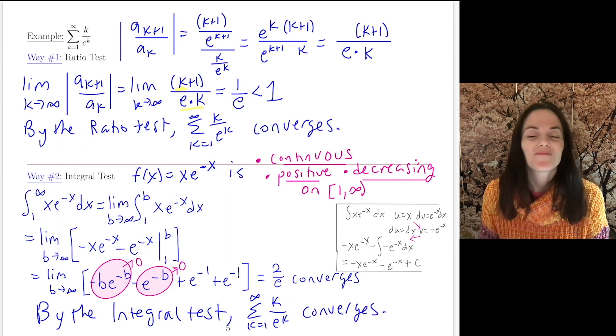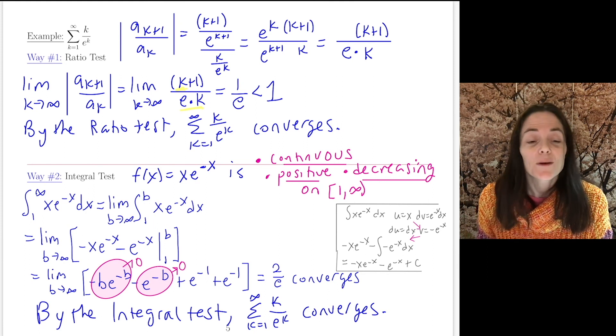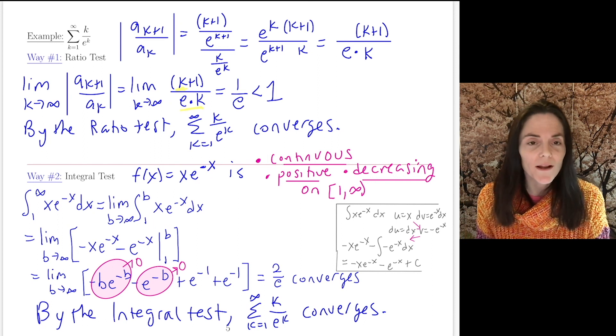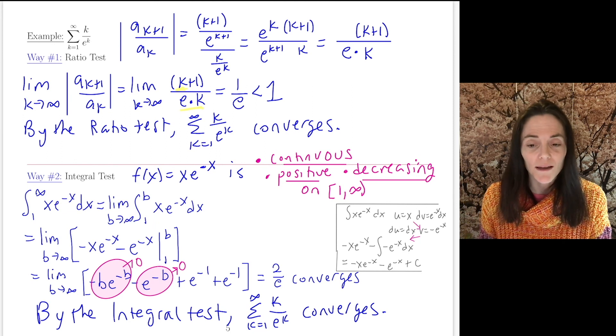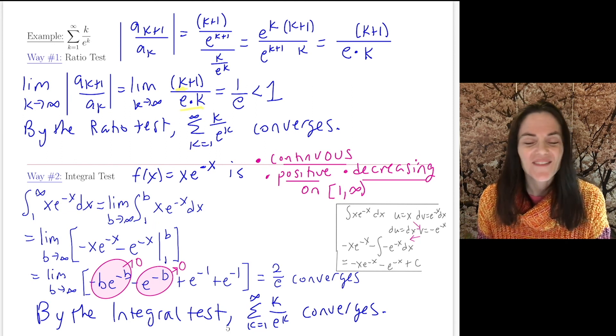And so you see, we found the series converges using two different ways, the ratio test and the integral test. Which one to use is which one you think of first, or which one that works for you, because either one is perfectly fine here. Either one can be fully justified. Thank you.